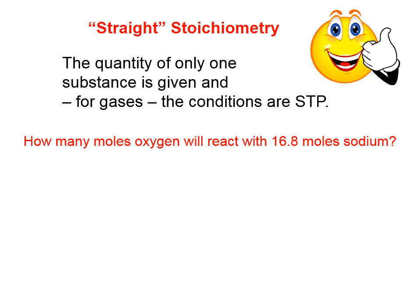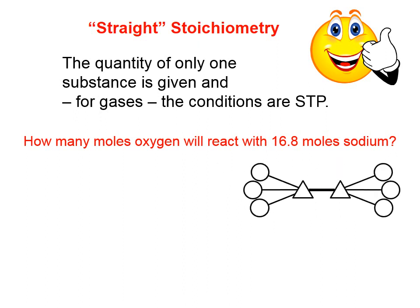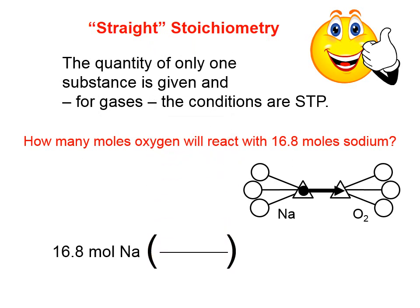Here's our first example: how many moles of oxygen will react with 16.8 moles of sodium? First, we decide which substance is the known amount. Sodium — we know 16.8 moles — and we're asked to calculate moles of oxygen. In the island diagram, the substance we know is on the left, and the substance we calculate is on the right. Since we're starting at moles of sodium and going to moles of oxygen, this calculation needs one conversion factor — we only cross one bridge. Whenever we cross the middle bridge, we must use the coefficients from the balanced equation.